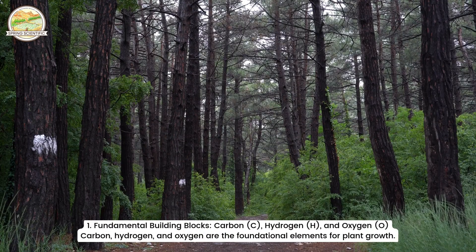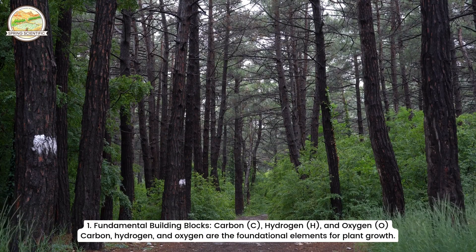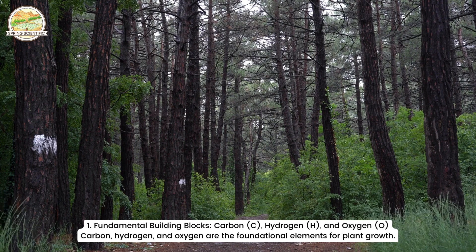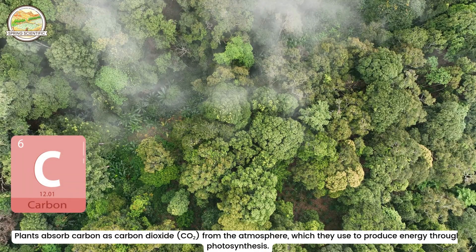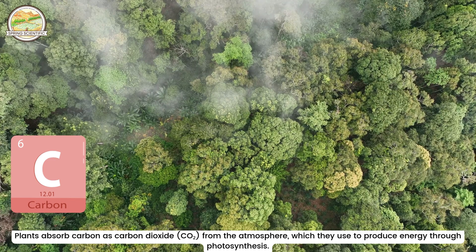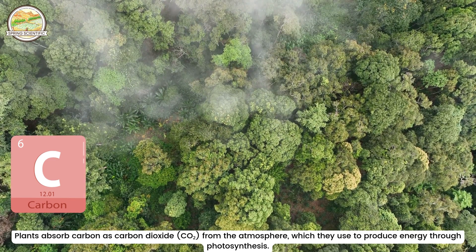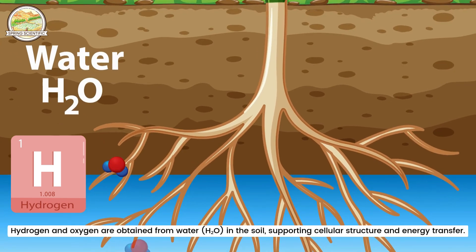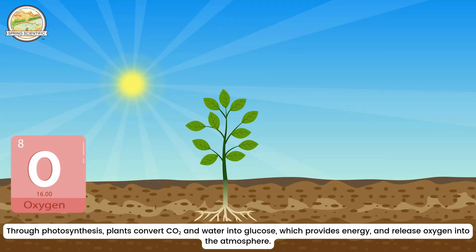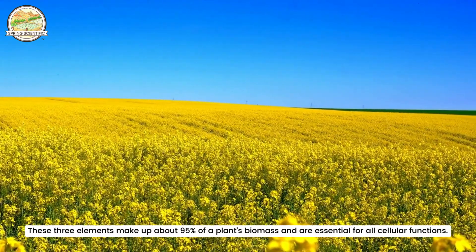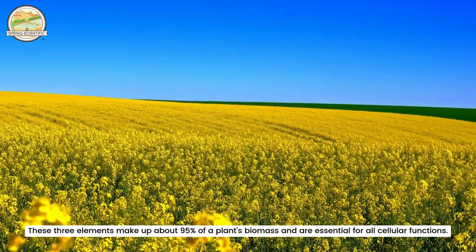Carbon (C), hydrogen (H), and oxygen (O) are the foundational elements for plant growth. Plants absorb carbon as carbon dioxide (CO2) from the atmosphere, which they use to produce energy through photosynthesis. Hydrogen and oxygen are obtained from water (H2O) in the soil, supporting cellular structure and energy transfer. Through photosynthesis, plants convert CO2 and water into glucose, which provides energy and releases oxygen into the atmosphere. These three elements make up about 95% of a plant's biomass and are essential for all cellular functions.